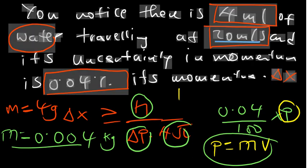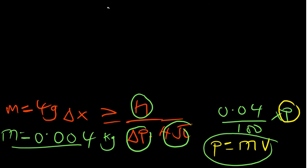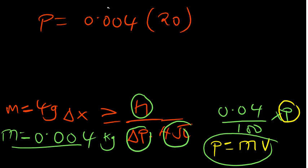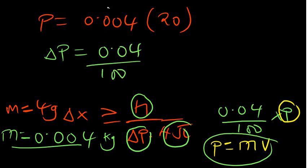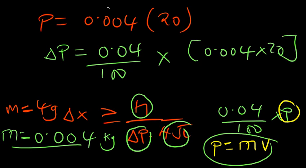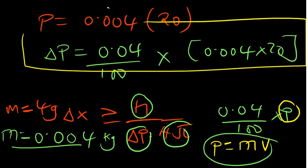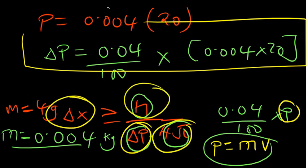Momentum = mass × velocity = 0.004 × 20. Then the uncertainty in momentum = 0.04% = (0.04 / 100) × momentum = (0.04 / 100) × (0.004 × 20). After finding that value, plug it into the formula: Δx ≥ h / (ΔP × 4π), multiplying by 4π and dividing by Planck's constant to get uncertainty in position.